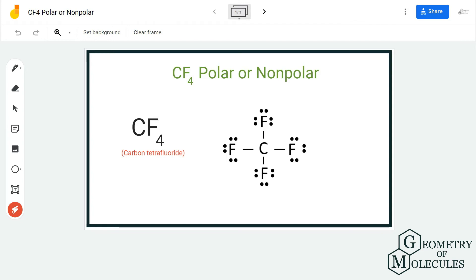Here, if you look at this 3D shape, you can see that all the fluorine atoms are arranged in opposite directions to each other. Now, fluorine atom is more electronegative than carbon atom.